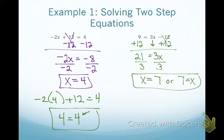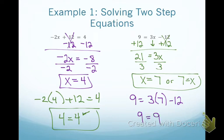Now pause and do the checking by yourself. You should have plugged in 7: 9 equals 3 times 7 minus 12. We know 21 minus 12 is 9, so it checks out. You don't have to show your steps for checking — I just want to see the substitution and then the boxed answer.